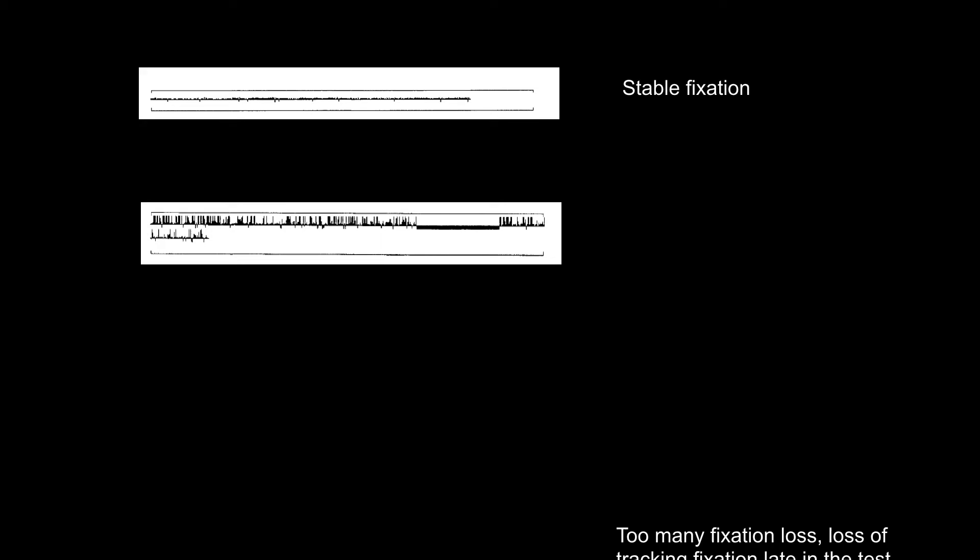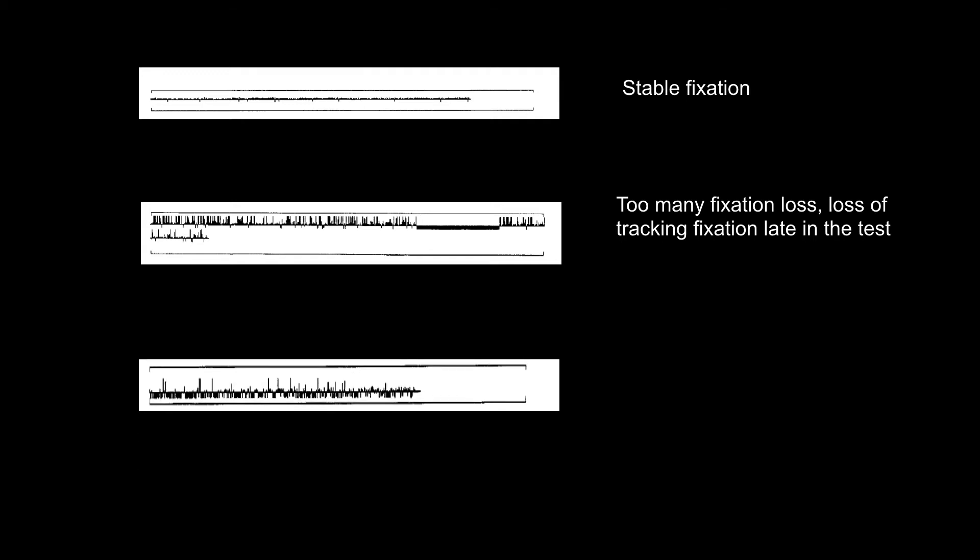These are examples of the gaze graphs. Stable fixation in the first one. The second one, the patient had too many fixation losses and had a period of losing the tracking fixation because the patient fell asleep.